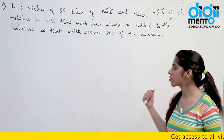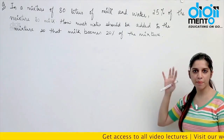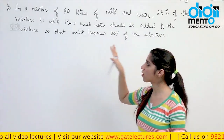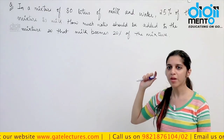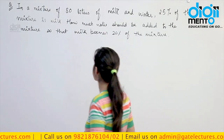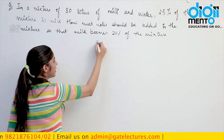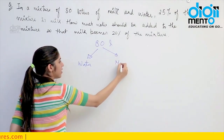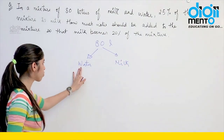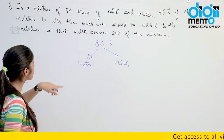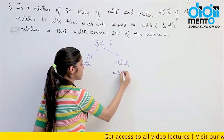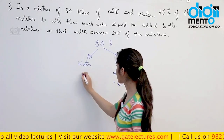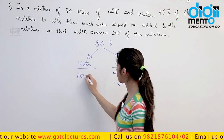Look at the next question — this is a question on mixtures. In a separate topic we will take mixture and allegation, where you can learn shortcuts. For now we are going to look at it from the viewpoint of percentages only. There is an 80-liter mixture of which some part is water and some part is milk. They say that 25% of the mixture is milk, so 25% of 80 = 20 liters of milk initially, and 60 liters of water.